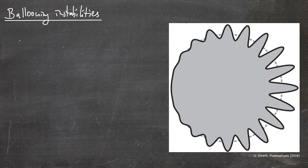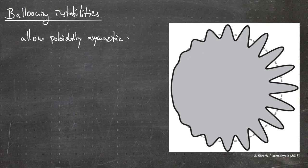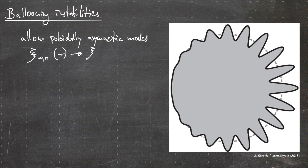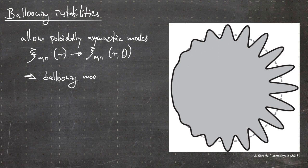What are ballooning instabilities? We now allow poloidally asymmetric modes — this is something new which we haven't allowed before. Instead of having ψ_{mn} being just a function of r, ψ_{mn} is now a function of r and θ. The corresponding modes are called ballooning modes.